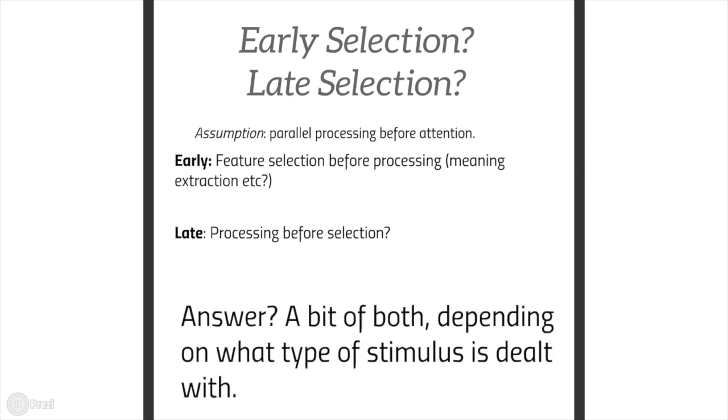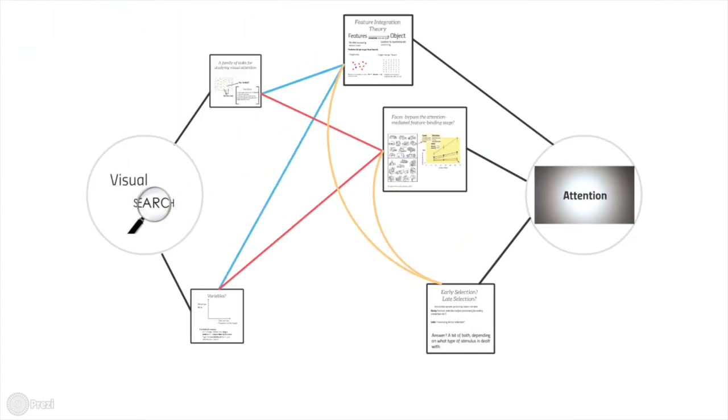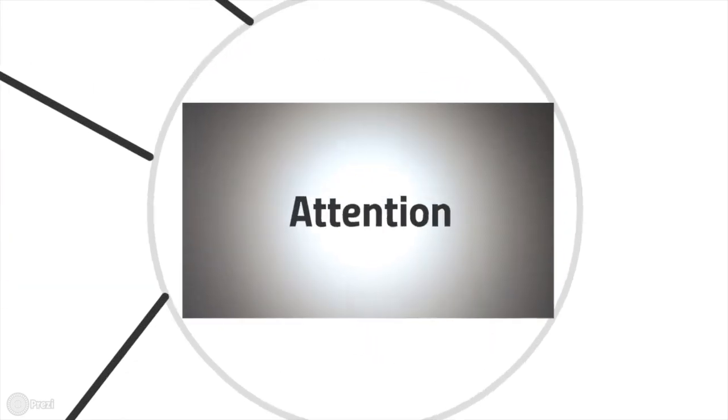The answer is that detection can be either an early or late selection process depending on the type of stimulus the brain is dealing with. And finally, this is how visual search tasks can be used to investigate functions and nature of attention.